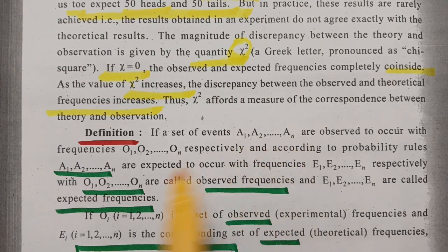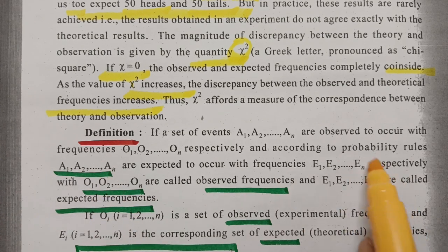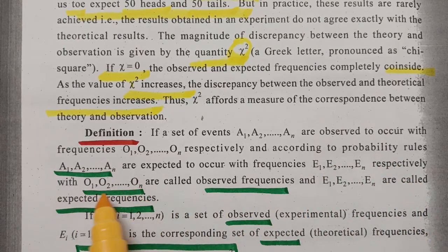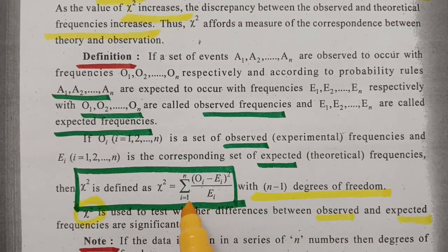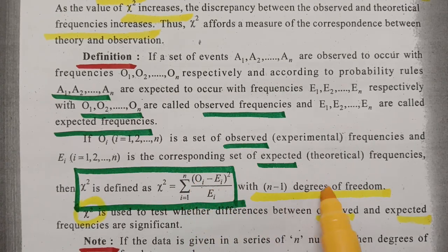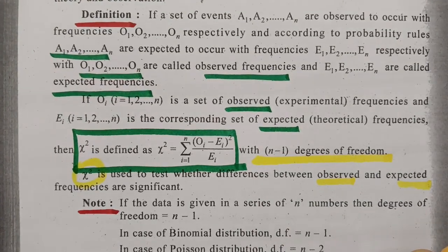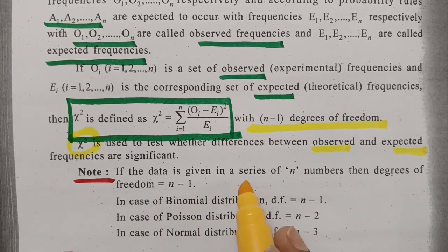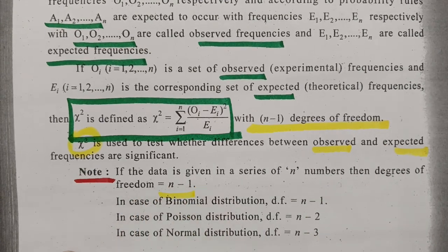The set of events: how many events are there? A1, A2, A3, and so on — N events. The expected frequencies are E1, E2, E3, ..., EN, and the observed frequencies are O1, O2, O3, ..., ON. The chi-square formula is: chi-square equals sigma from i=1 to N of (Oi minus Ei) squared divided by Ei, with N minus 1 degrees of freedom. If the data is given in a series, the degrees of freedom is N minus 1 usually.